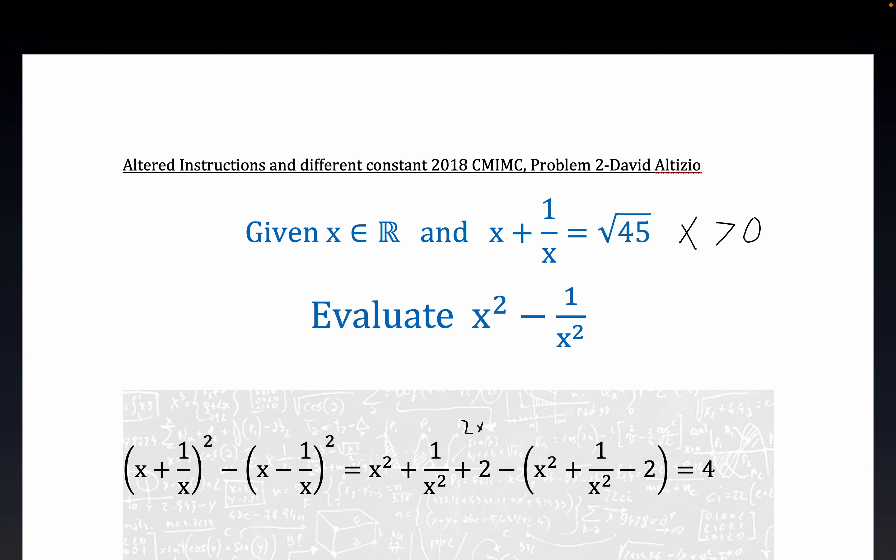It's a result that when you expand this guy out, you end up with 2 times x times 1 over x. That's where this 2, it seems like a miracle sort of, unless you've seen this expression many times. But when you expand this out, you have x times 1 over x happening twice.